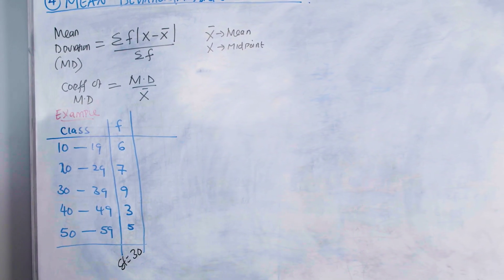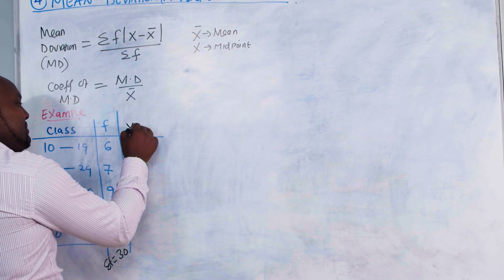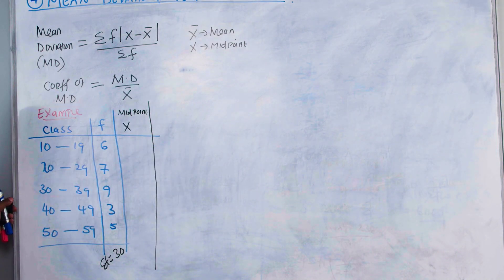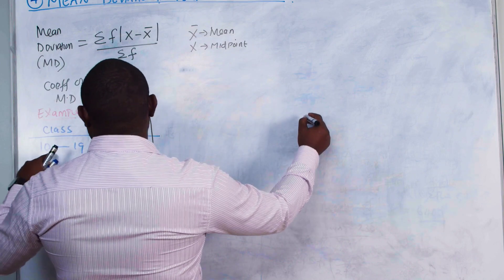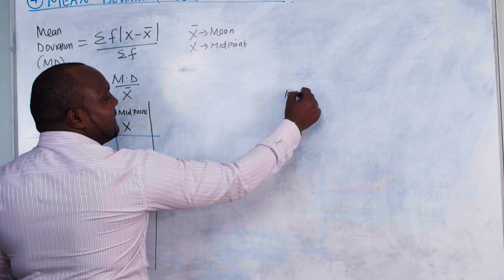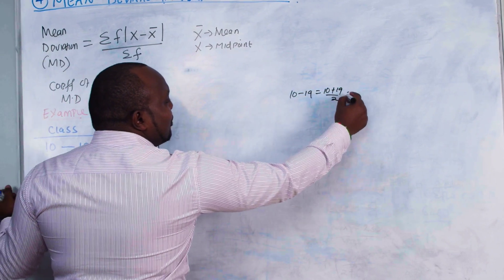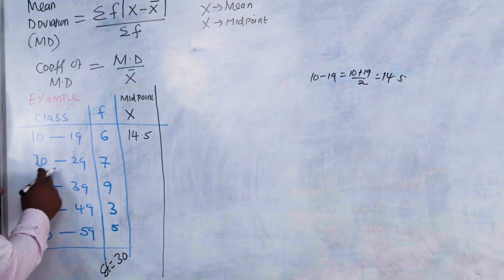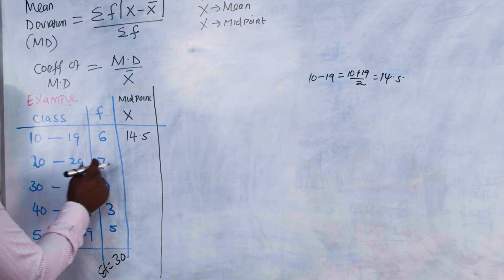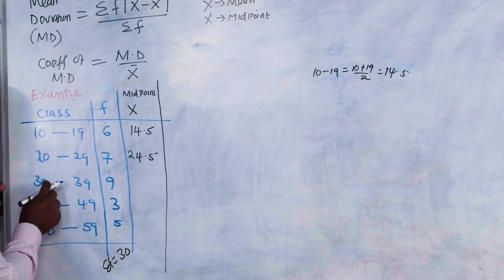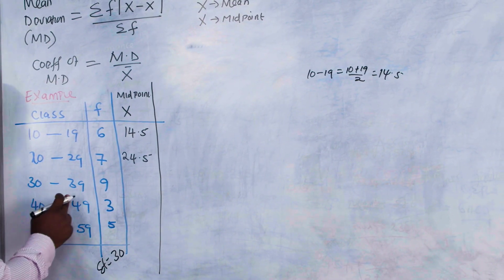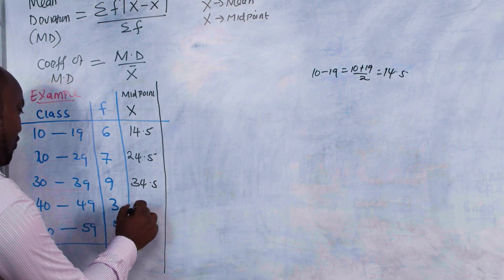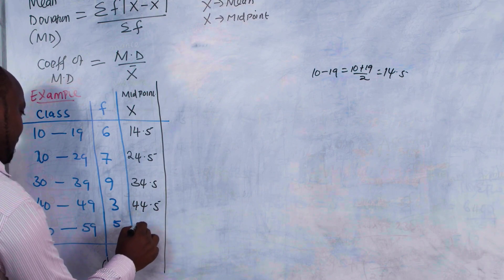As you can see, we must calculate our mean. For the mean, we introduce the midpoint. I showed you how we get the midpoint: for a class of 10 to 19, it is (10 + 19) / 2 = 14.5. For 20 to 29, we get 24.5. For 30 to 39, we get 34.5. For 40 to 49, we get 44.5. And for 50 to 59, it is 54.5.